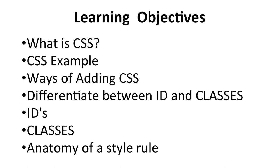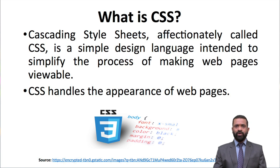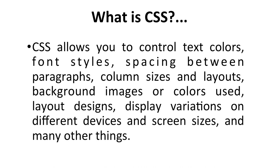To start with, what is CSS? Cascading Style Sheets, affectionately called CSS, is a simple design language intended to simplify the process of making web pages viewable. CSS handles the appearance of web pages and allows control of text colors, font styles, and spacing between paragraphs.